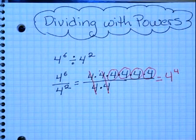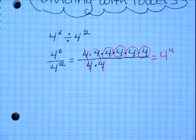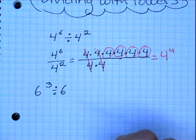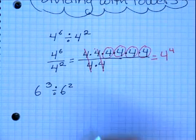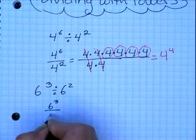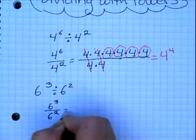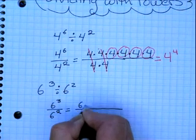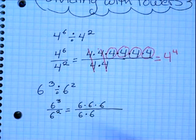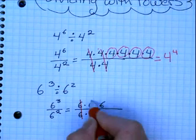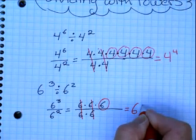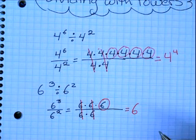Let's look at a second example: 6 to the 3rd power divided by 6 to the 2nd power. Again, we rewrite the problem in fraction form — 6 to the 3rd divided by 6 to the 2nd. When we write that out in expanded form, we have 6 times 6 times 6 divided by 6 times 6. Again, 6 divided by 6 is 1, and 6 divided by 6 is 1, leaving us just one 6. So our answer is 6 to the 1st power, but because it's only one 6, we don't need to write the exponent.